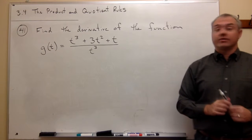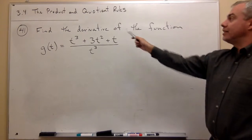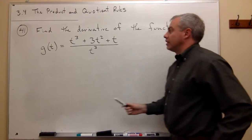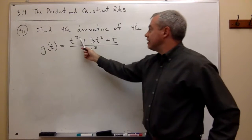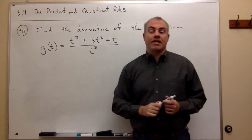Okay, in question number 41, I would like to find the derivative of the function g of t is equal to t cubed plus 3t squared plus t divided by t cubed.